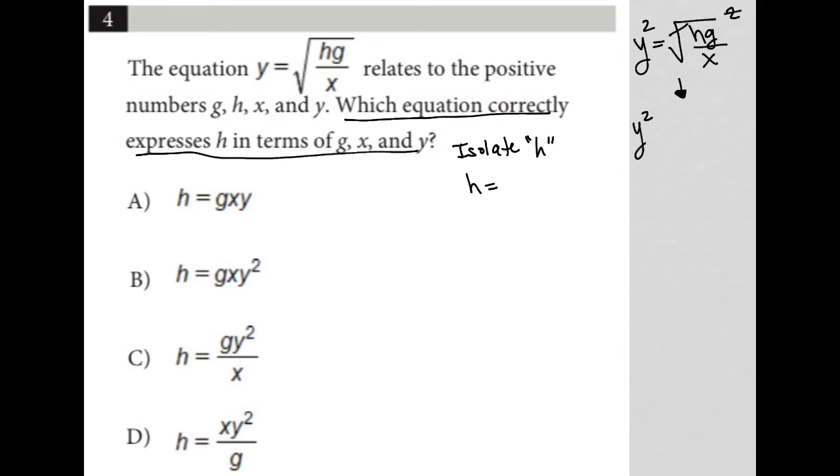So y squared would equal hg divided by x. I'm going to then multiply both sides by x because that allows me to get rid of this x in the denominator here. So I'd have xy squared equals hg.